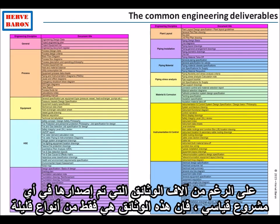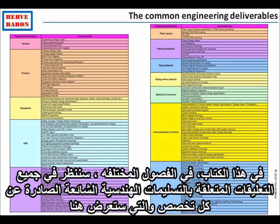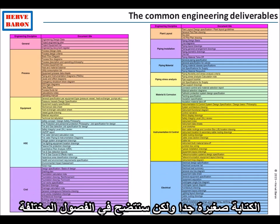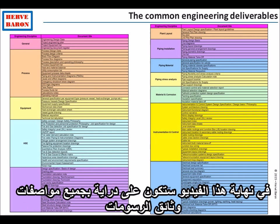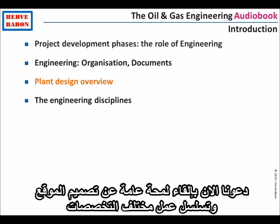By quickly knowing the issuing discipline and the type of document, even though there are thousands of documents issued on any typical-size project, these documents are only of a few types. For example, piping issues general arrangement drawings for each plant area — there might be 300 of them, but they are all of the same type: piping general arrangement drawing. In the different modules we will look at all the common engineering deliverables issued by each discipline. At the end of this session you will be familiar with all the documents, drawings, and specifications.